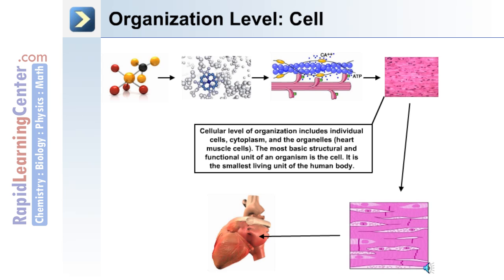Cellular organization is the next level. This includes the cell itself, including its cytoplasm and the organelles within it. The cell is the most basic structural and functional unit of an organism, and the smallest living unit of the human body.